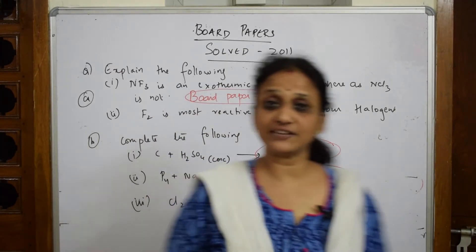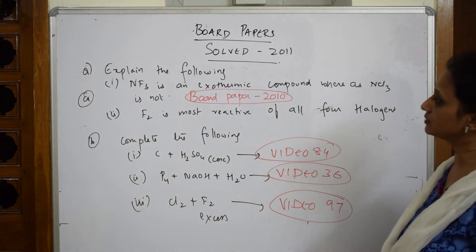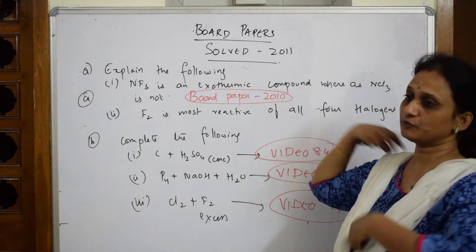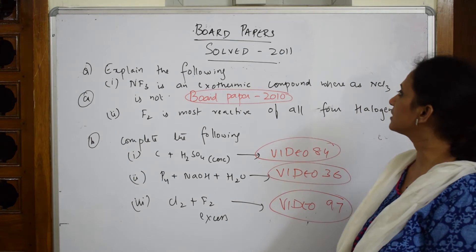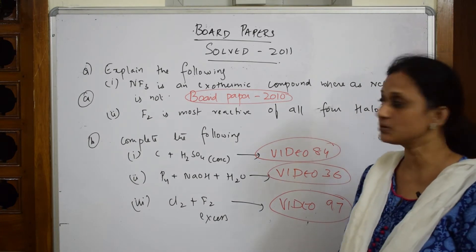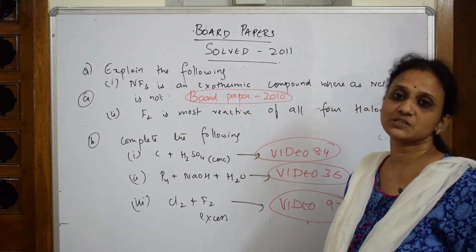Right, let's come back and solve your 2011 paper. First question: explain the following - NF3 is an exothermic compound whereas NCl3 is not. I did the same question in 2010 also, please watch that video.